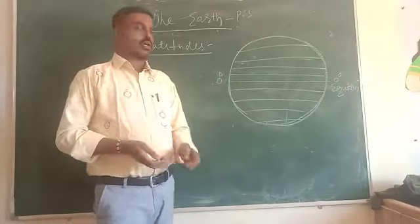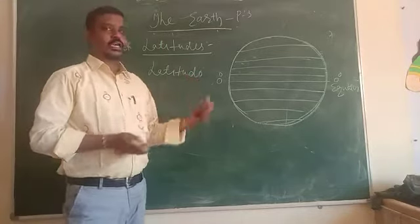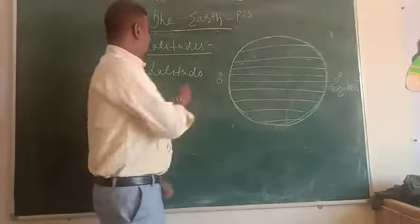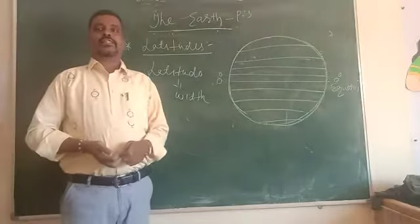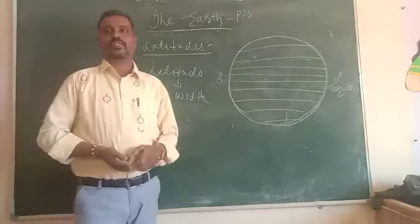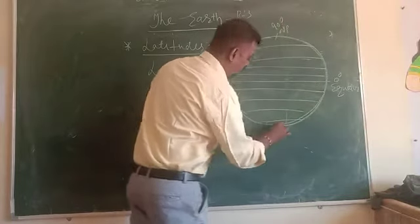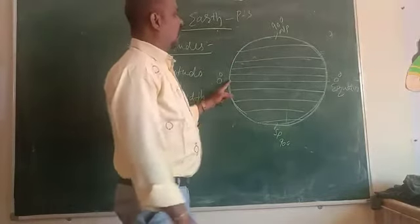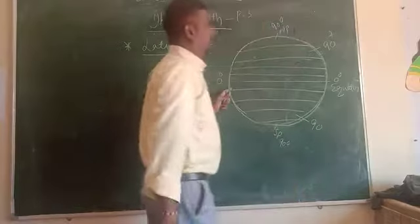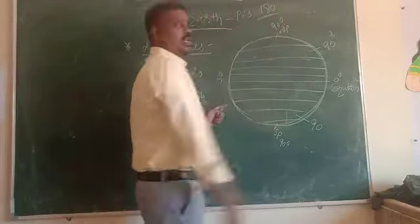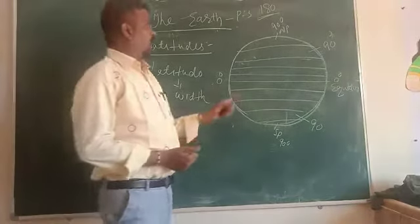Latitudes come from the Latin word 'latitudo', which means width. These lines show the width of the map. From zero degree to the North Pole, there are 90 latitudes, and from zero degree to the South Pole, there are 90 latitudes. So in total, there are 180 latitudes.